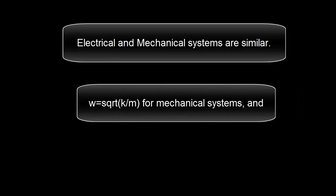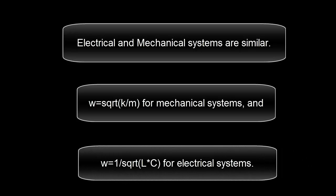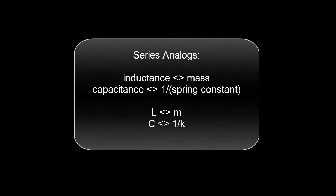Electrical and mechanical systems are similar. Omega is the square root of k over m for mechanical systems, and omega is 1 over the square root of LC for electrical systems. Inductance is analogous to mass, and capacitance is analogous to inverse spring constant.